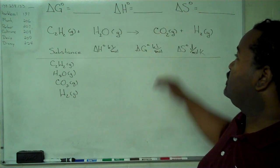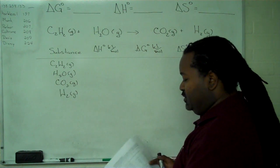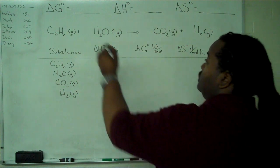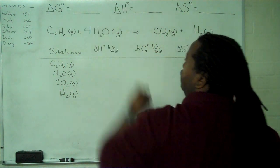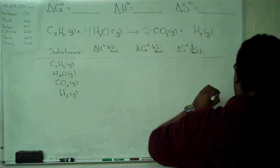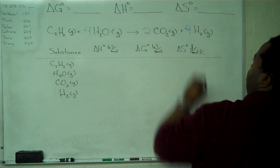So the first thing necessary is to balance the reaction, and we can tell by looking that this one is not. So we will need to have four waters, two moles of carbon dioxide, and four moles of hydrogen gas.